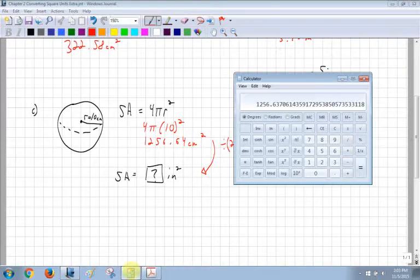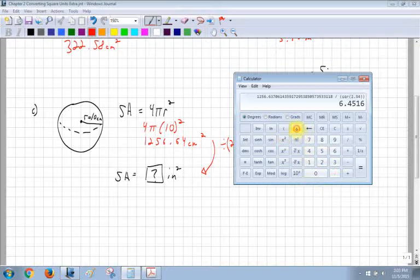So I take my answer of that. And I divide by, and look, you can use brackets on your calculator too. They're very handy. So divided by 2.54 squared. End my brackets. Equals 194.78.